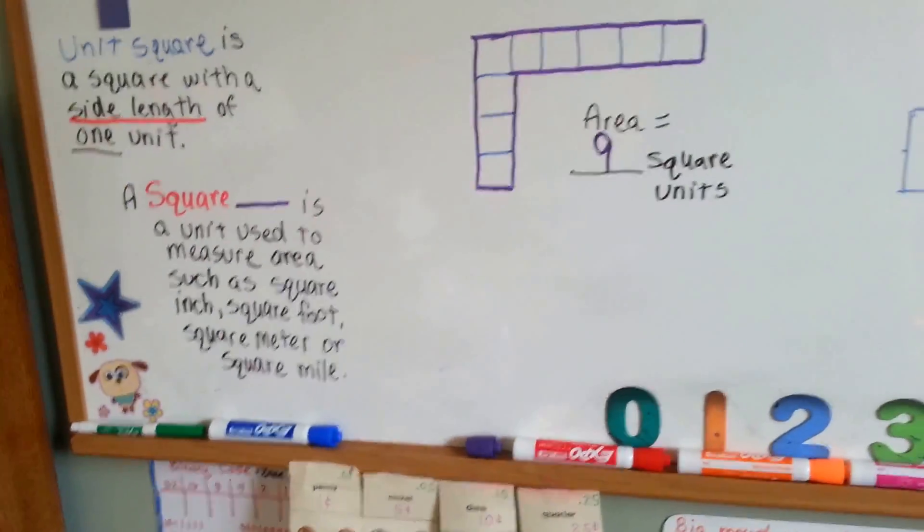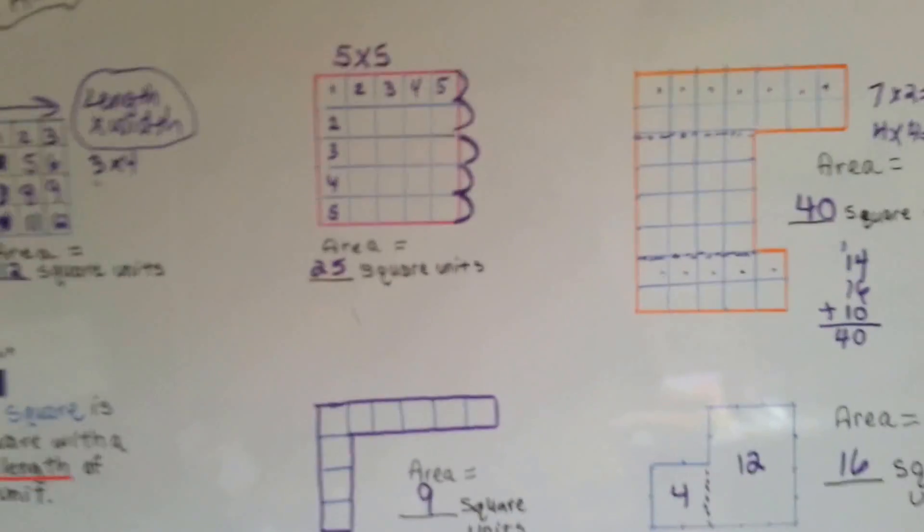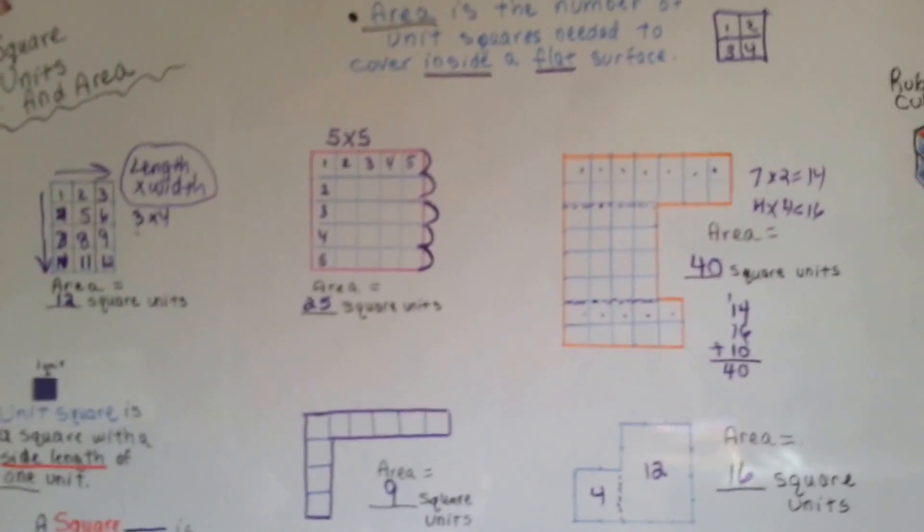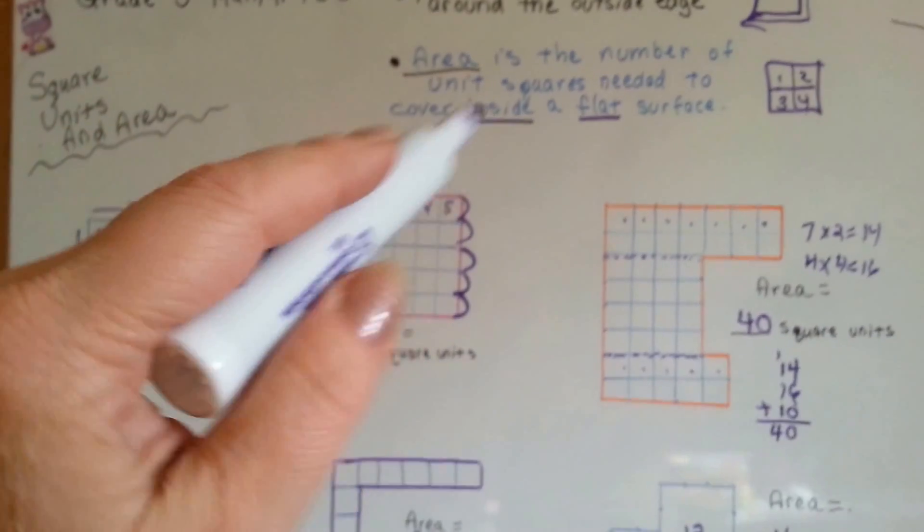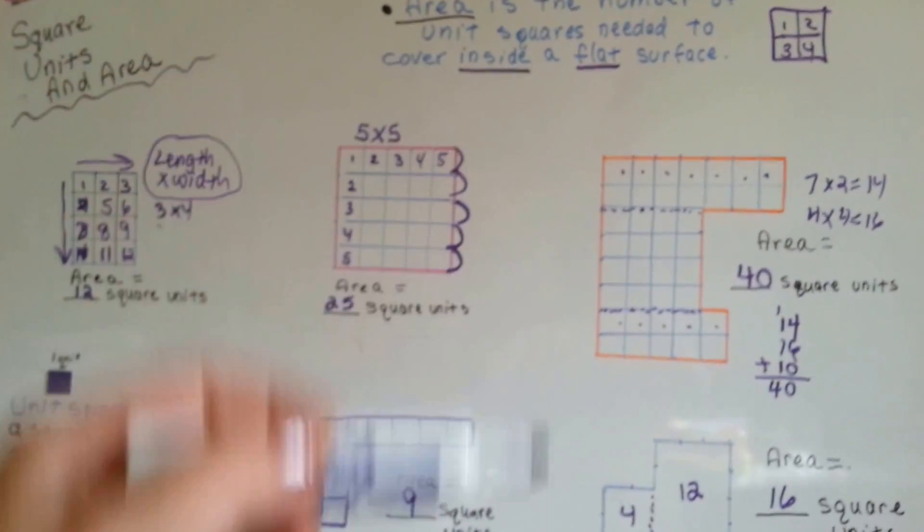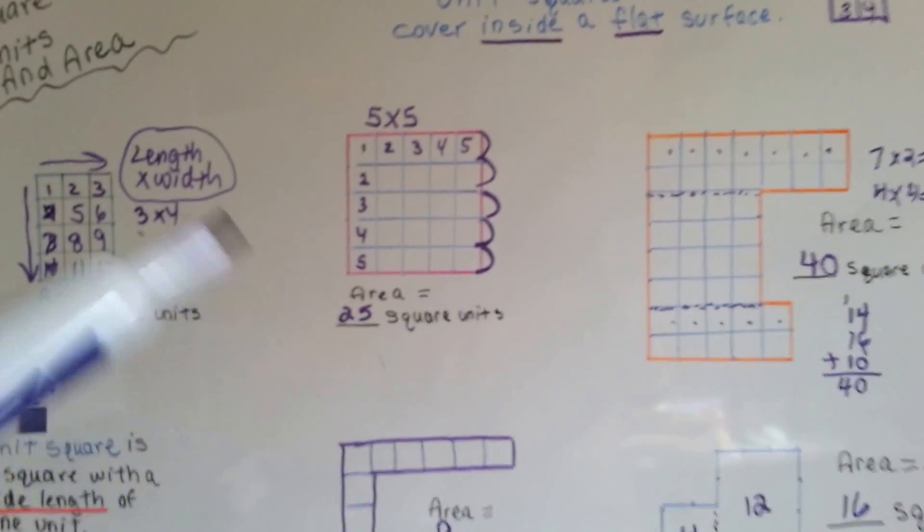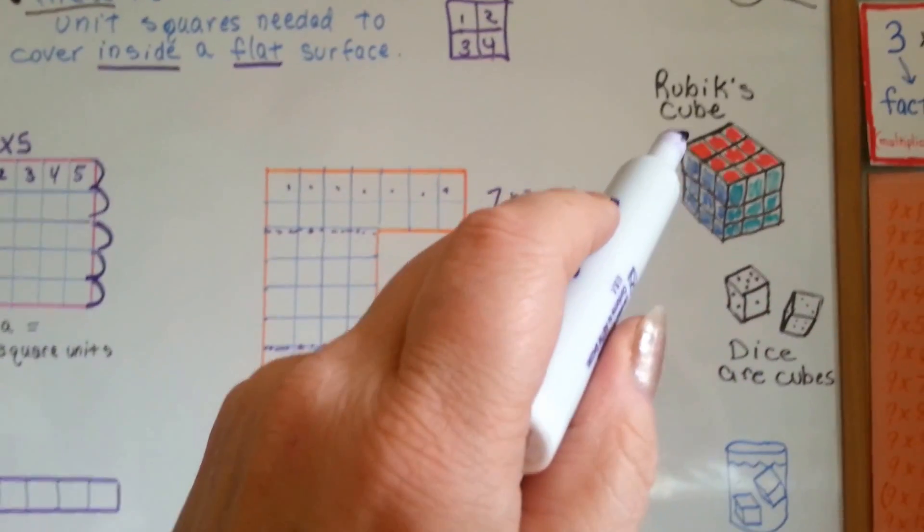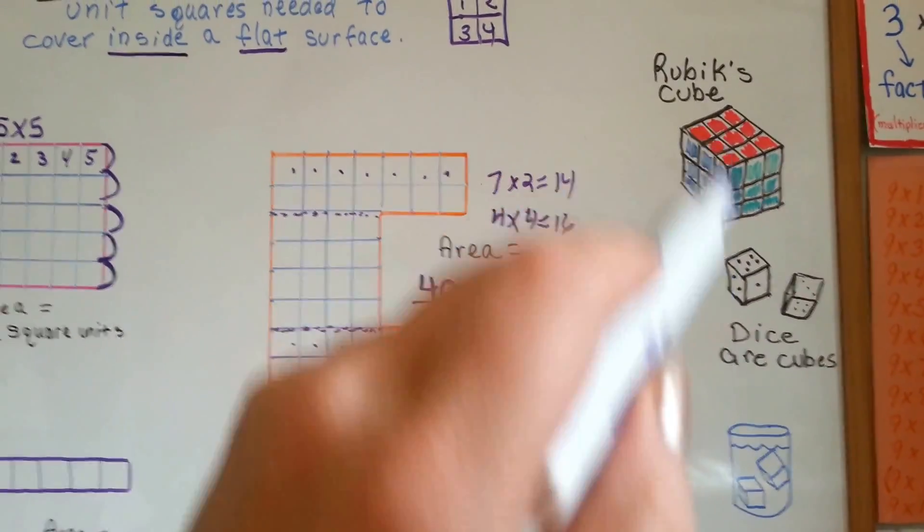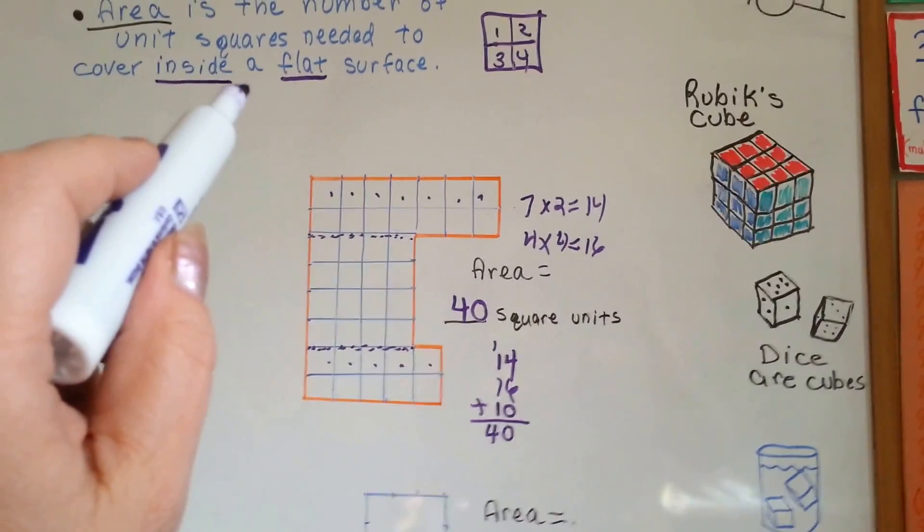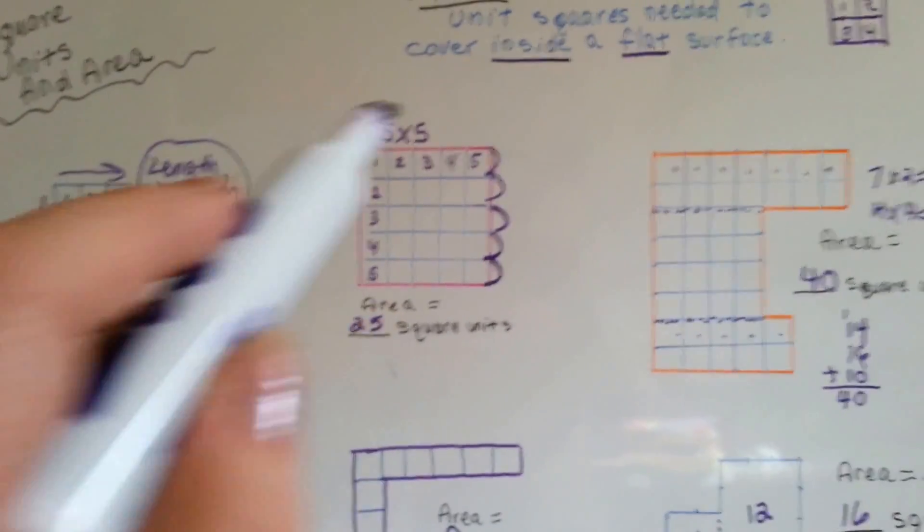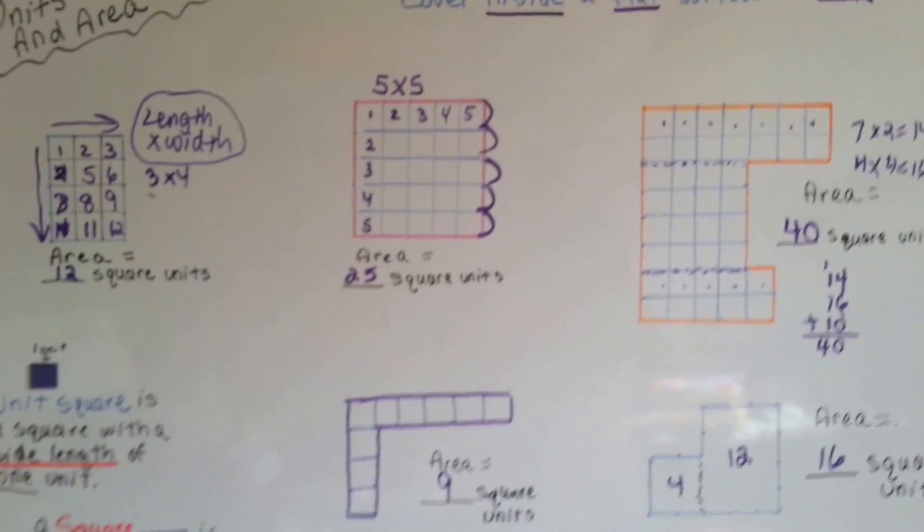So, this is how you do square units and measure area and a flat surface. So, I want to show you one more thing while we're saying flat. If you've ever seen a Rubik's Cube or dice or ice cubes in a drink, those are cubes. Those are not flat. That's a different type of measurement. We're doing flat surface area.